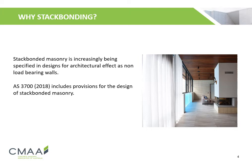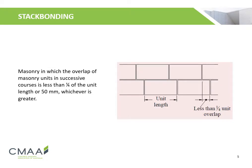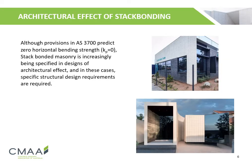Australian Standard AS3700 Masonry Structures includes provisions for the design of stack bond masonry. A masonry wall is classified as a stack bonded wall if the masonry unit overlap in successive courses is less than one quarter of the unit length or 50 millimeters — the larger value shall be used. Although provisions in AS3700 predict zero horizontal bending strength, stack bonded masonry is becoming increasingly specified in designs incorporating architectural effect.